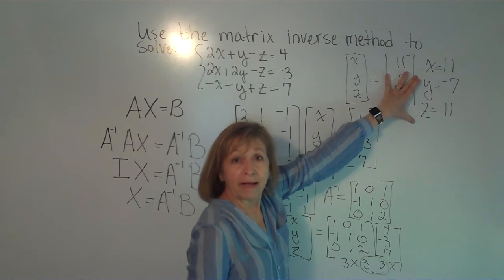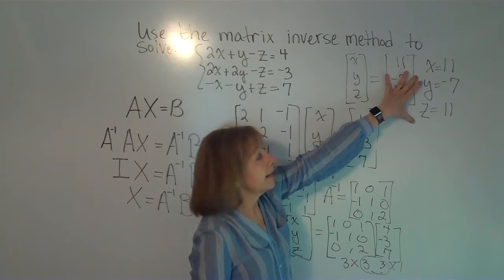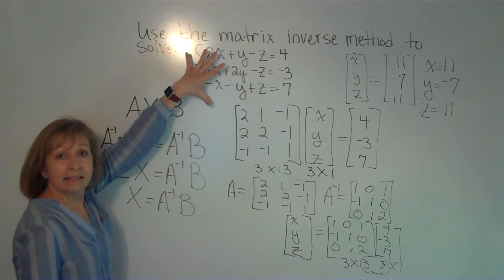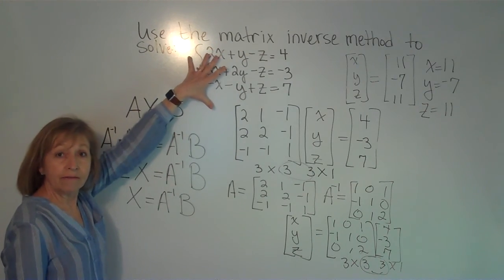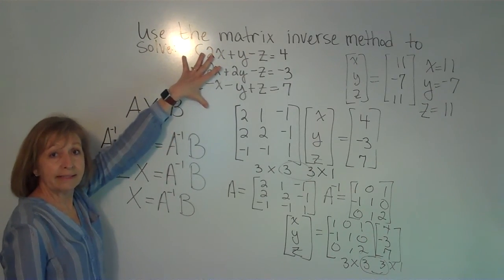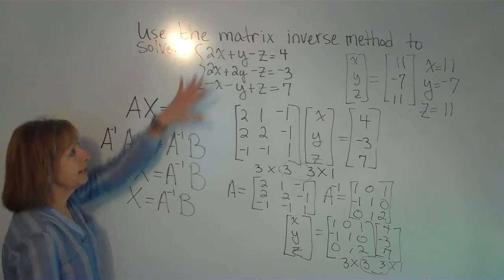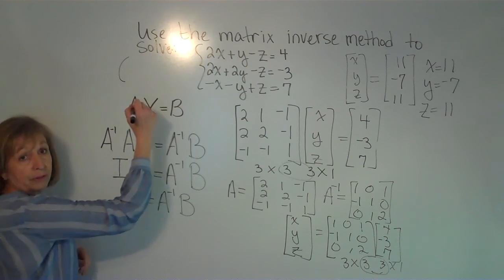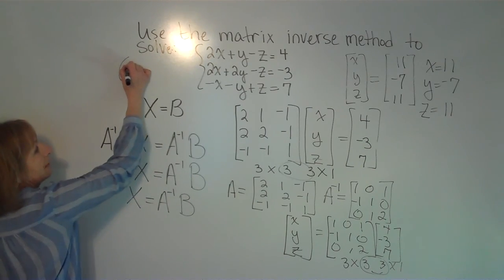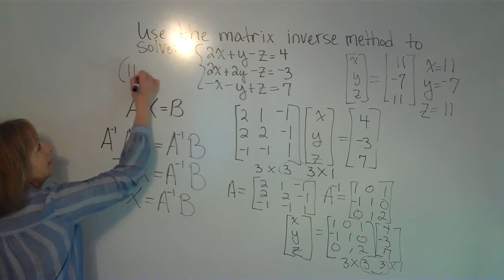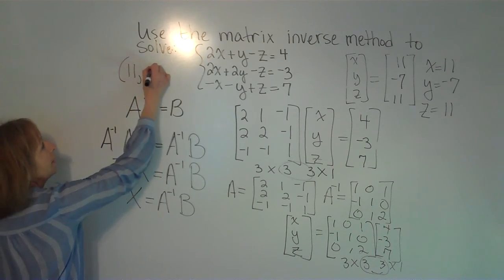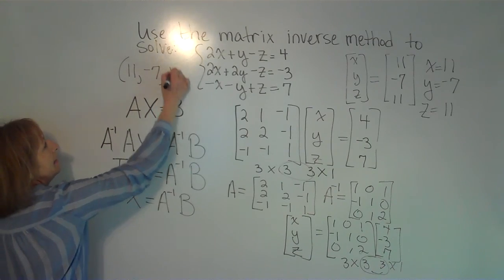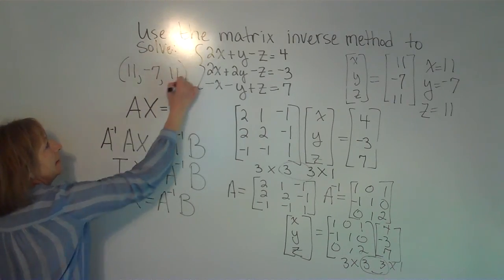Those are the values for x, y, and z that solve this system of linear equations. Written as an ordered triple: x = 11, y = −7, z = 11.